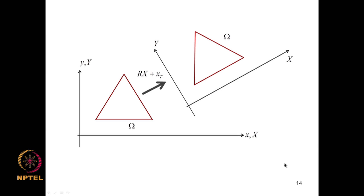Pictorially, for a triangular domain the effect of R is to rotate it and the effect of xT is to translate it. This is how the element looks upon undergoing rigid body rotation and translation.